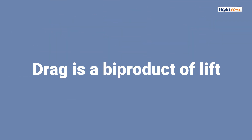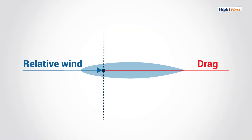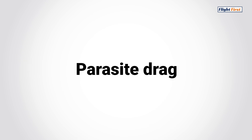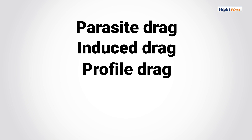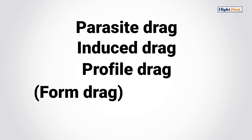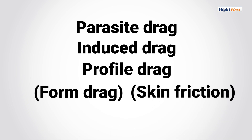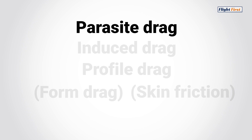Drag is a direct byproduct of lift — whenever lift is created, drag will follow along. Drag acts parallel to the relative wind. There are three main types of drag: parasite drag, induced drag, and profile drag, which consists of form drag and skin friction. Let's talk about each one in detail.